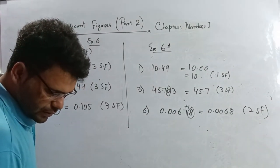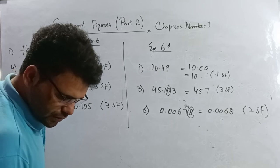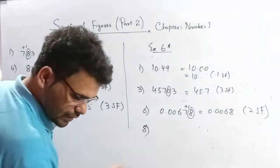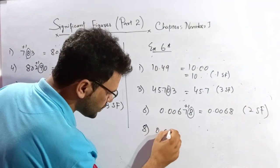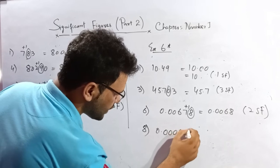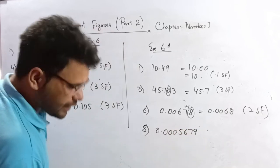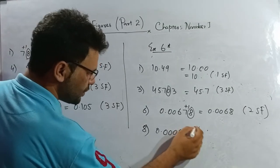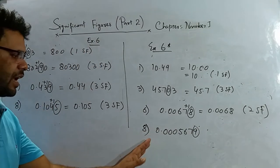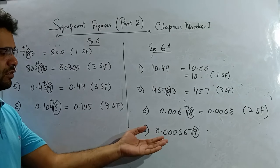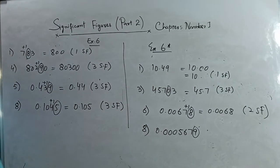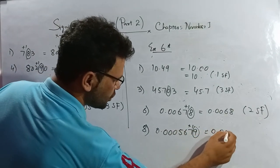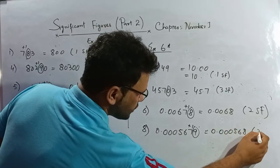Question number 8: 0.00056679, write corrected to three significant figures. I check the fourth significant figure — one, two, three, and four. Zeros on the left side in the decimal portion are not counted as significant figures. The fourth SF is greater than five, so I add one. The answer is 0.000568, correct to three significant figures.